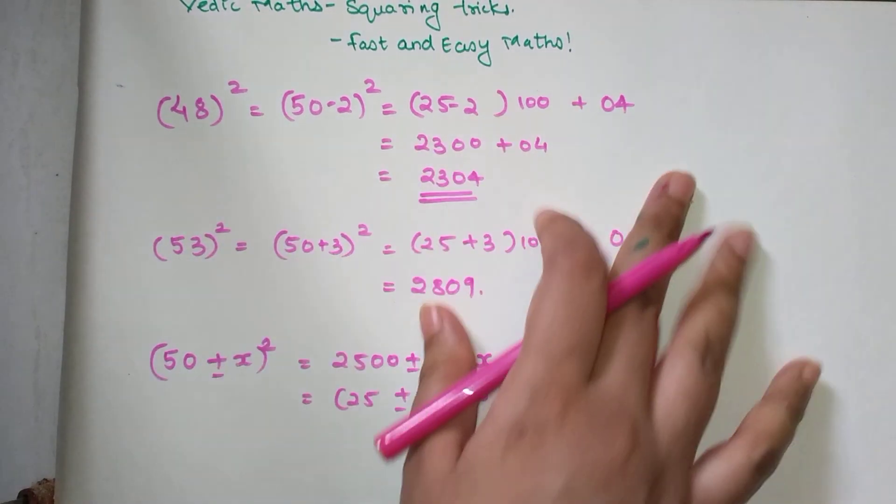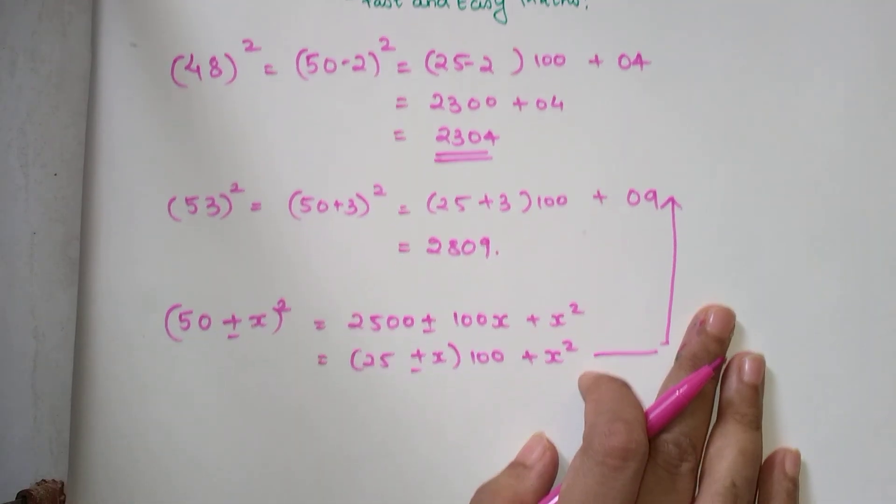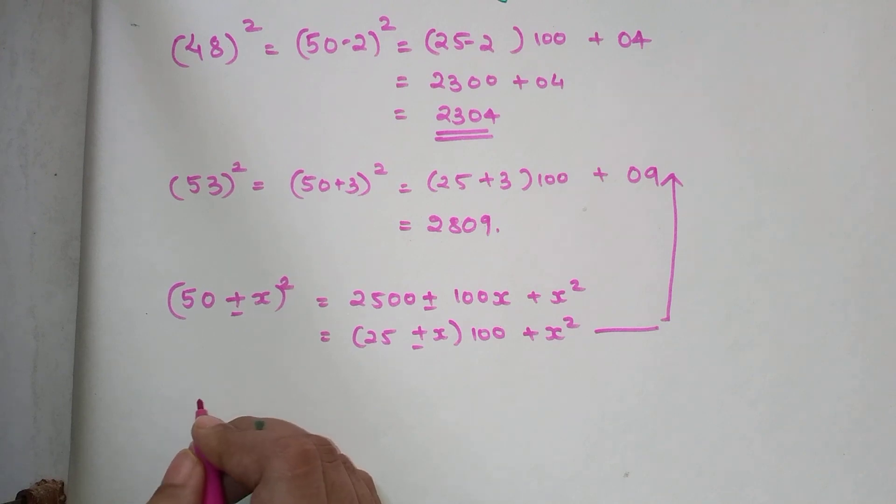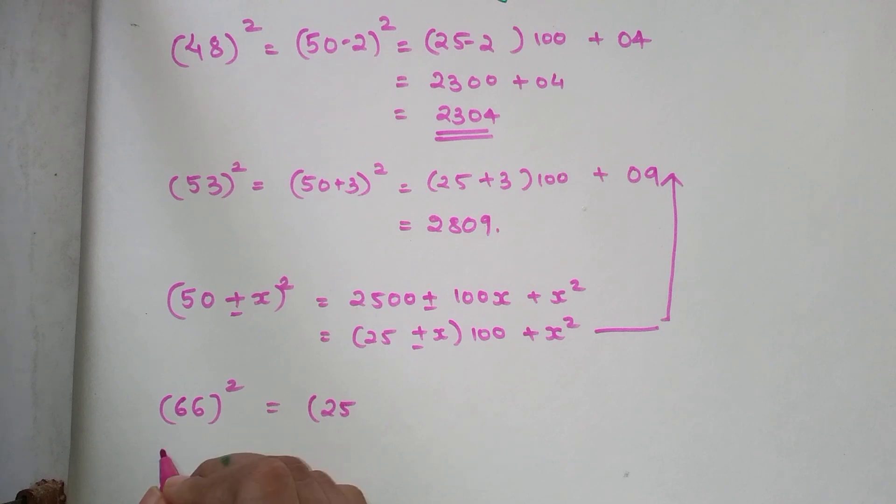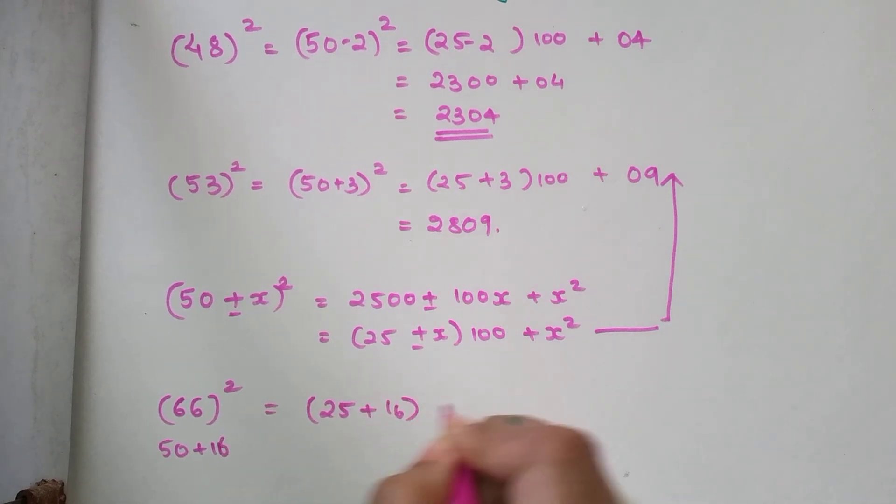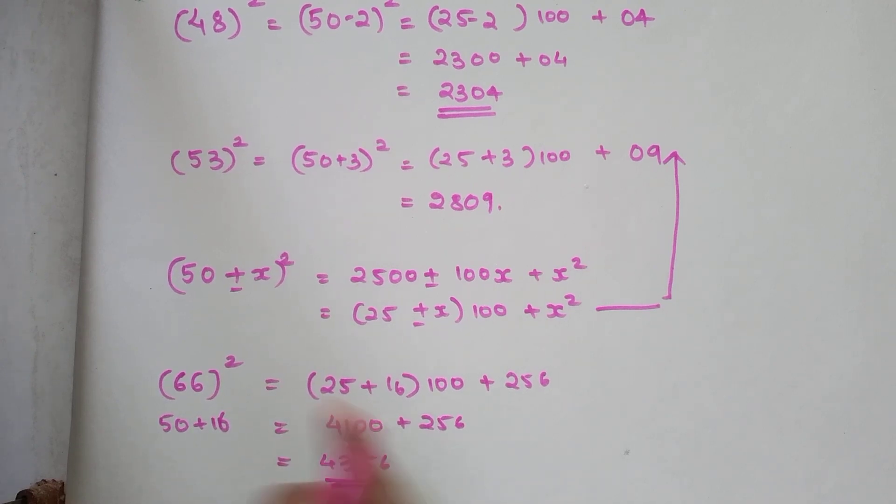So now, students, you must be wondering that this trick is good for digits which are closer to 50. But what happens if we have a digit which is very far? Like, for example, if you had to find out square of 66, I will simply now use this format. So this can be written as 25. 66 is 50 plus 16. So 25 plus 16 into 100 plus 16 square, that is 256. So 25 plus 16 is getting you 4100 plus 256. That gets you 4356. If you have doubt, you can use your calculator. Trust me, that is the answer for the square of 66.